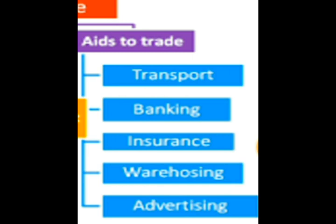Next is advertisement. When the producer has produced a good or comes up with a new product, he needs to inform consumers about the availability of the product. Because if consumers are not aware about the availability of the product, how will they purchase it? And how can the producer inform the consumer? It is through advertisement. So now it is clear that aids to trade help in the smooth flow of trade.